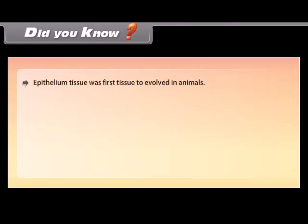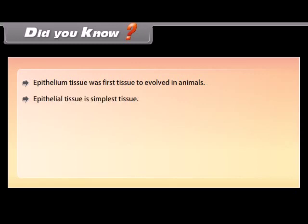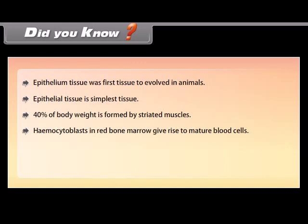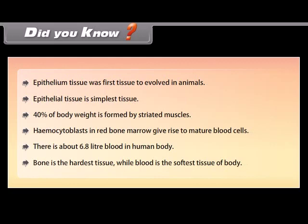Did you know? Epithelial tissue was the first tissue to evolve in animals and is the simplest tissue. 40% of body weight is formed by striated muscles. Hemocytoblasts in red bone marrow give rise to mature blood cells. There is about 6.8 liters of blood in the human body. Bone is the hardest tissue while blood is the softest tissue of the body.